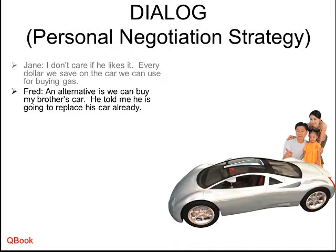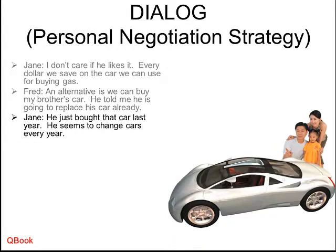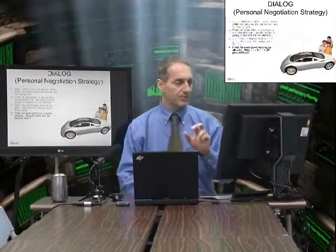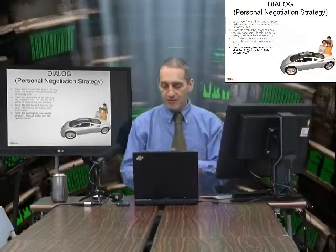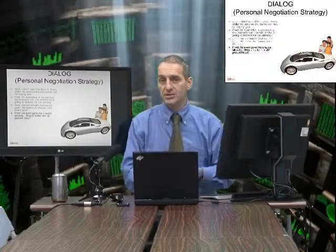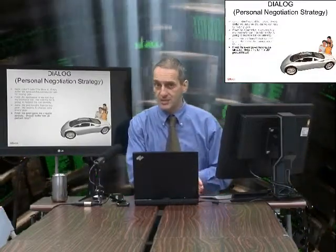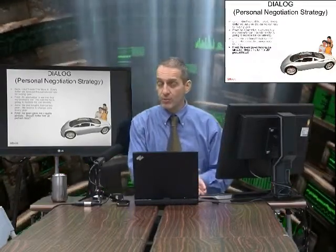Fred mentions an alternative: they could buy his brother's car, since his brother is going to replace it. Jane notes the brother just bought the car last year and seems to change cars every year. Fred says his brother already gave him a quote and asks whether he should offer 20% less. This raises the question — would you ask your brother for a 20% discount? It's kind of hard. He's your brother and you don't want to cause bad feelings.